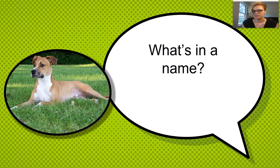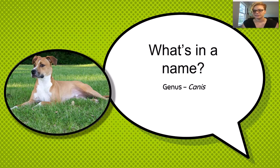Whenever you use the scientific name of a species, you need to follow some formatting conventions. First, the name must be italicized, then it must be written in the correct order. We start with the genus — in this case Canis — and the genus name is capitalized. Then we list the species name, lupus. This word is not capitalized.